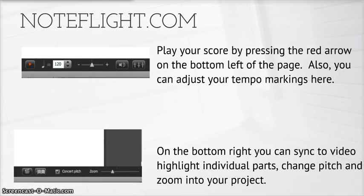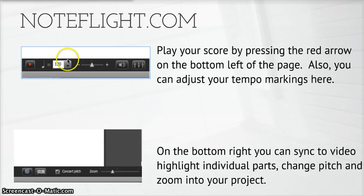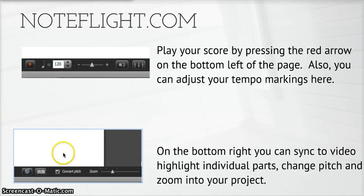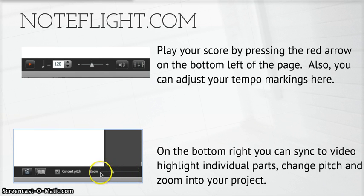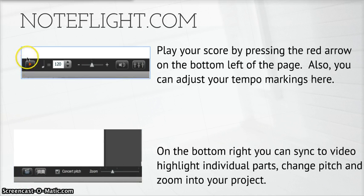Step 4: Make adjustments. Musical scores vary in tempo and pitch. Clicking on the bottom section of the page can easily make these adjustments. The tempo marking number can be raised or lowered, and the concert pitch can be adjusted as well. In addition, you have the zoom feature, which comes in handy when inputting and playing back your score. You can also input video, as well as use the easily recognizable playback feature.